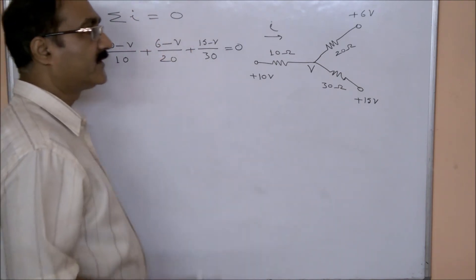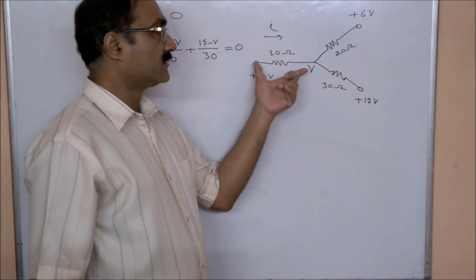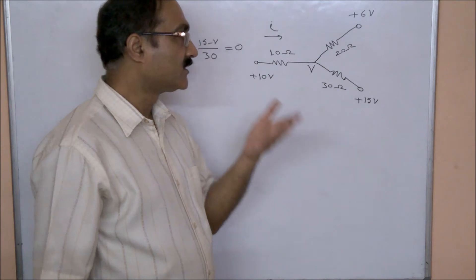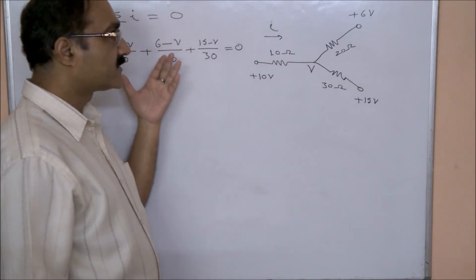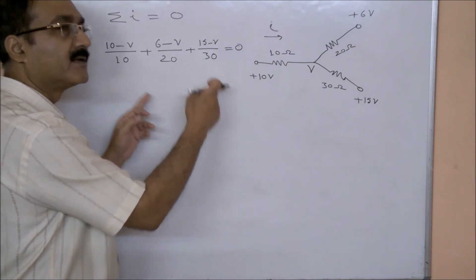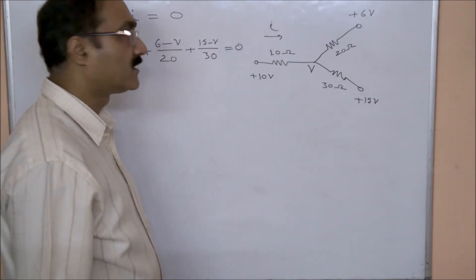So once you find out V, the difference in potential divided by 10 will give you the current. So this much is the physics part. After that we just solve it, that is the mathematics part, and we get the answer.